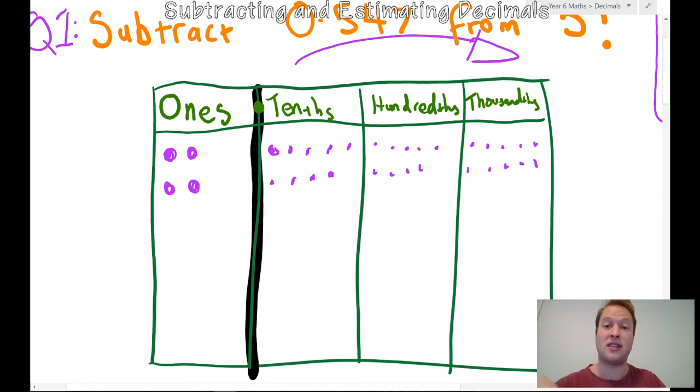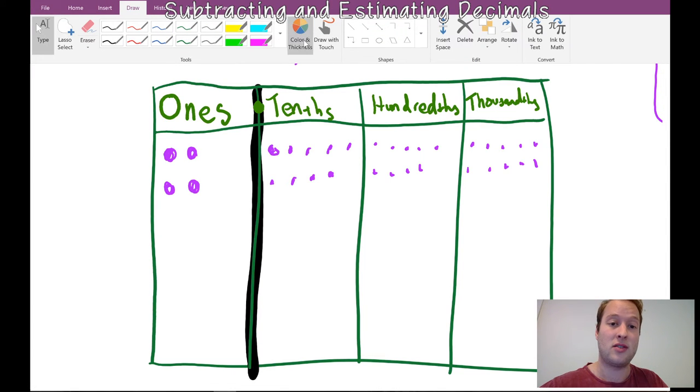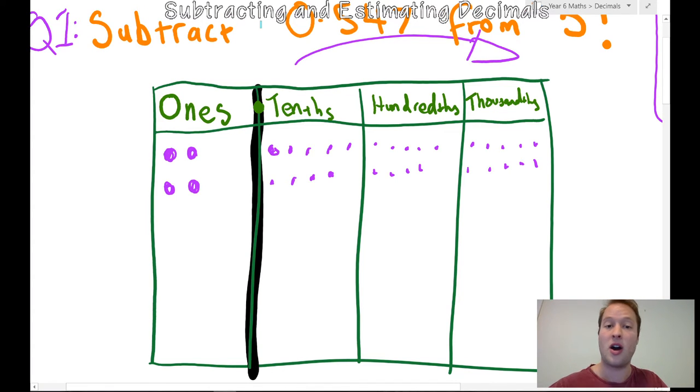Now I can start subtracting. So I want to take away seven. I might just change my color here so it does not get confusing. I'm just going to highlight the ones that I want. So I'm going to cross out seven. So one, two, three, four, five, six, seven. I need to take away four from the hundredths. One, two, three, four. I need to take five from the tenths. One, two, three, four, five.